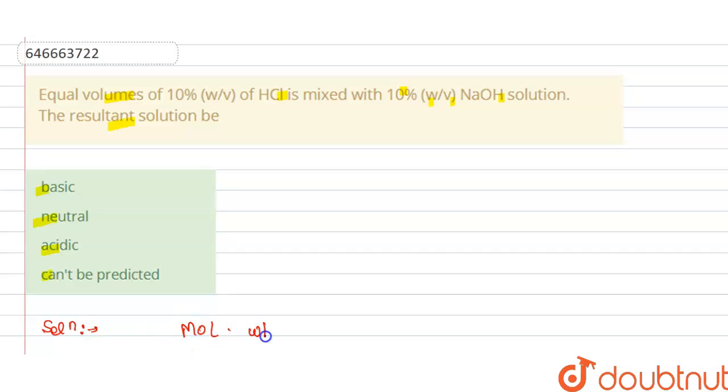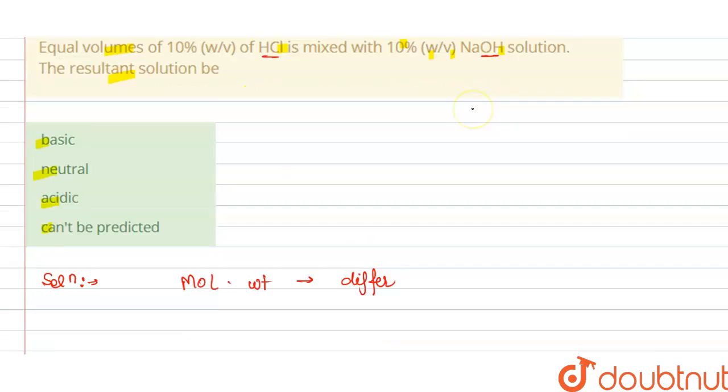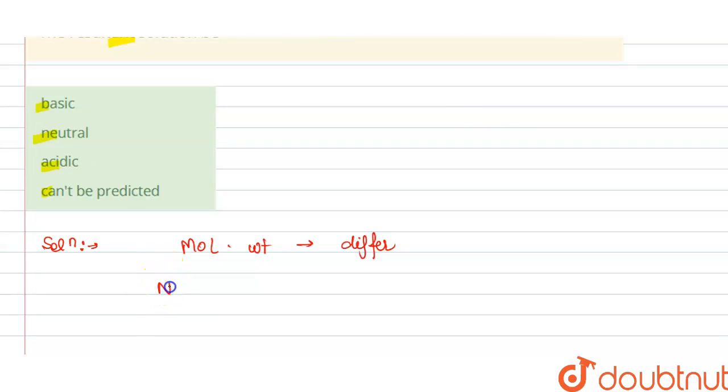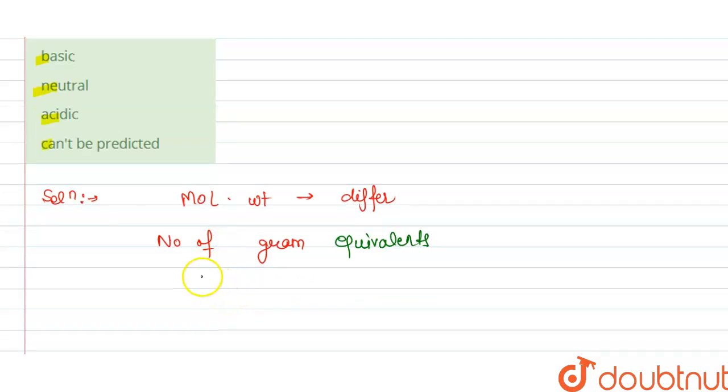we have the molecular weight is different for HCl and NaOH, so we have to firstly find the number of gram equivalent. This is number of gram equivalent here. So we know that